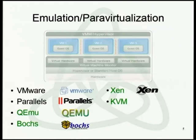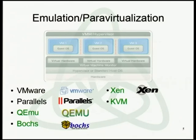With para-virtualization, on top of hardware there is a layer called a hypervisor or virtual machine monitor, which creates multiple instances of virtual hardware. On top of those instances you run your operating systems. This is what Xen, KVM, VMware, and others do.